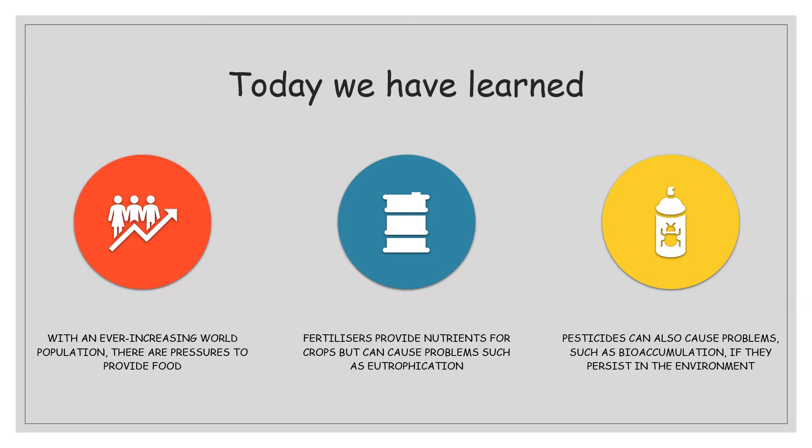To summarise: an ever-increasing world population puts pressure on food production, so we use fertilizers and pesticides to maintain crop yields. However, fertilizers can cause problems such as eutrophication if they end up in waterways, and pesticides can cause bioaccumulation if they persist in the environment and aren't broken down readily. Hopefully you found that useful and informative. As always, if you have any problems, questions, or queries, get in touch.